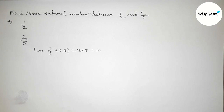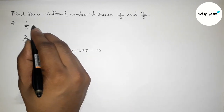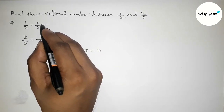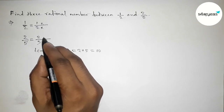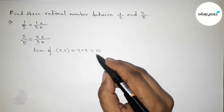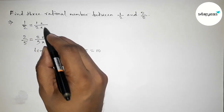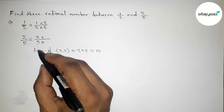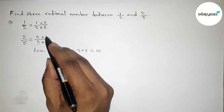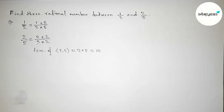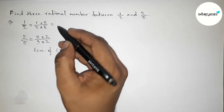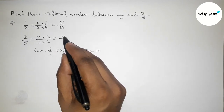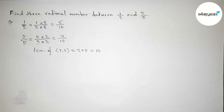Now we have to make the denominator 10 for both. For 1/2, we multiply up and down by 5 to get denominator 10 — so 5/10. For 2/5, we multiply up and down by 2 to get denominator 10 — so 4/10. Now both denominators are equal at 10.